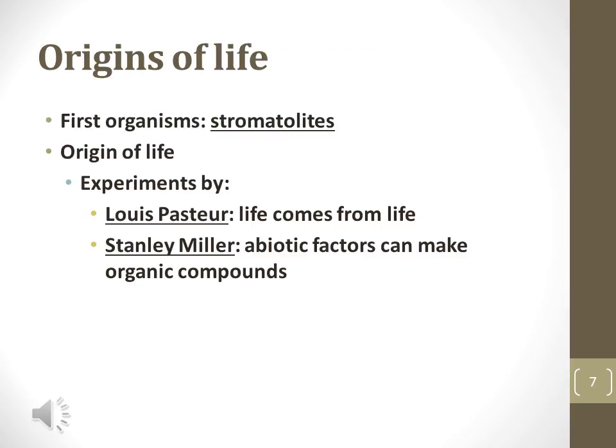Some of the first organisms known were stromatolites, that were similar to modern cyanobacteria. These organisms were present 3.5 billion years ago and began producing oxygen in the atmosphere. Louis Pasteur demonstrated that cells only come from other cells. There are several theories regarding the origin of the first cells, including the RNA-first theory, which suggests the first replicating forms of life were RNA macromolecules.